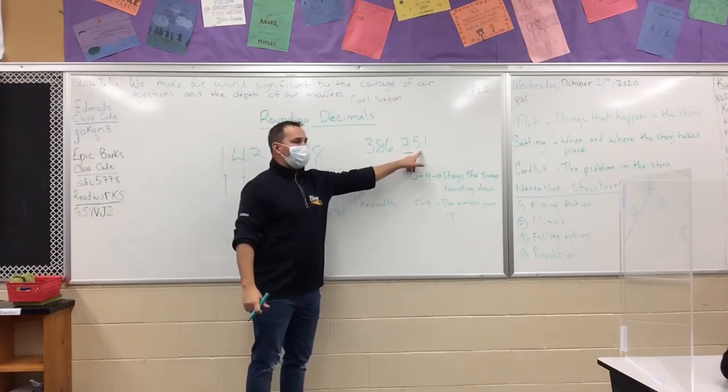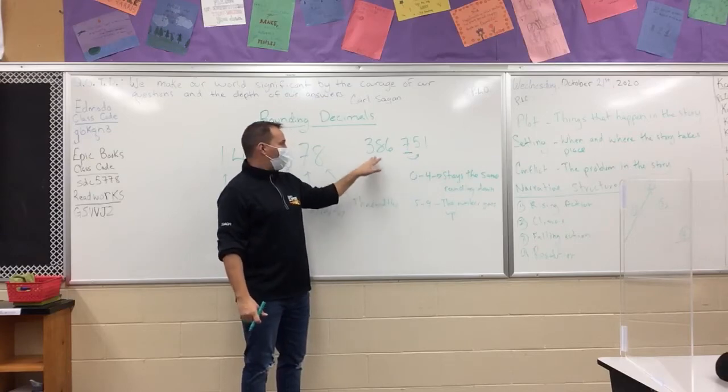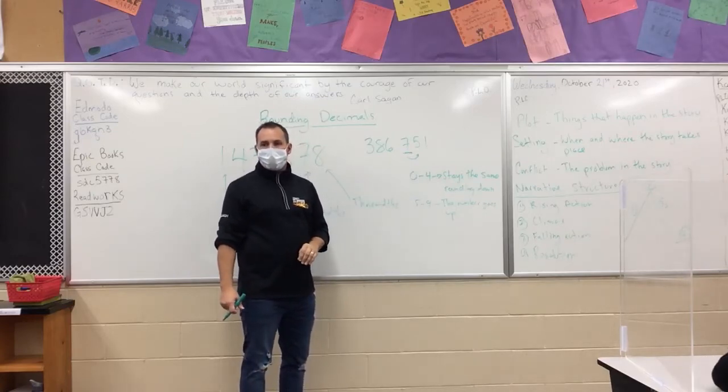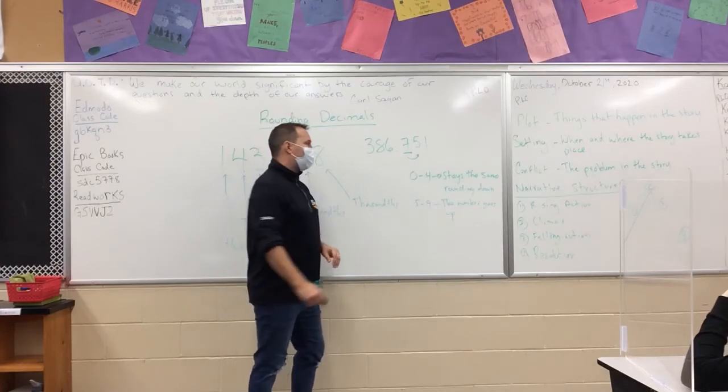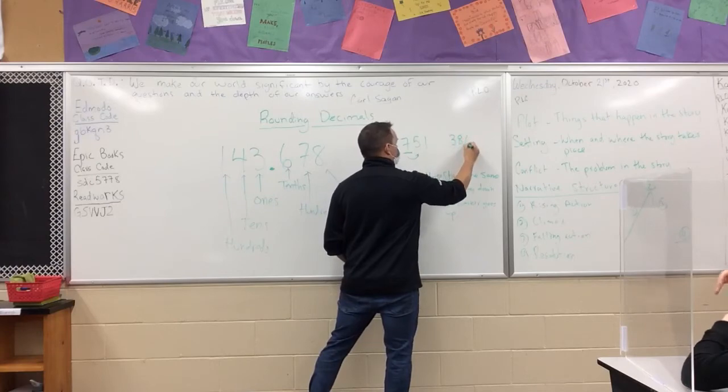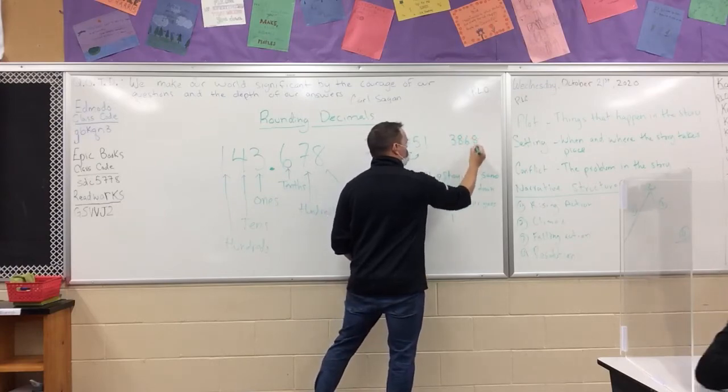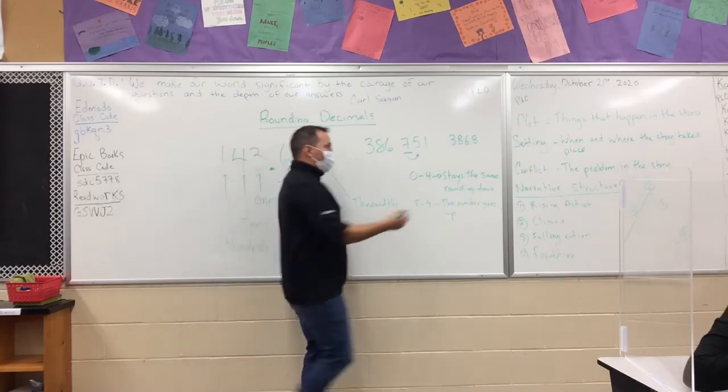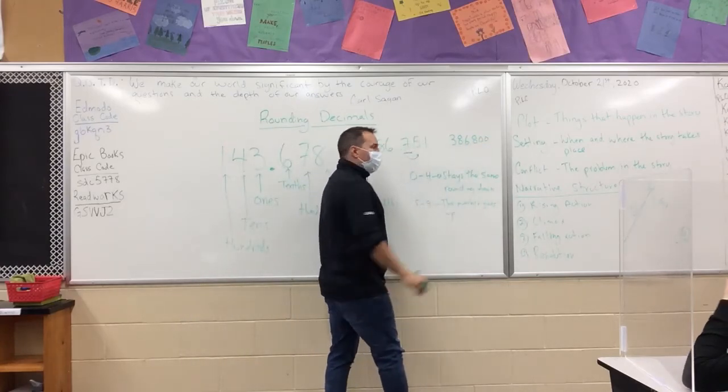No, because the number beside it is a 5. So if we're rounding to the nearest tenth, what does 386.751 become? 386 decimal 8. Or you could say 800 if you wanted to. But if we're rounding to the nearest tenth, you then look at the number beside it, which is 5.